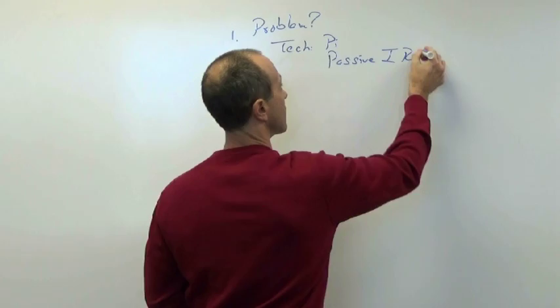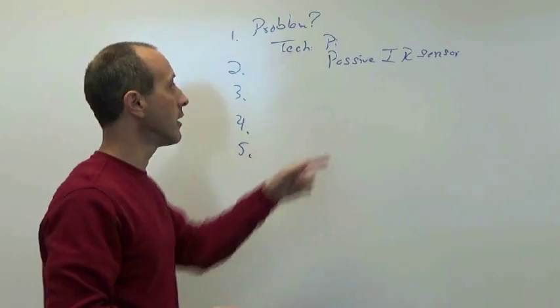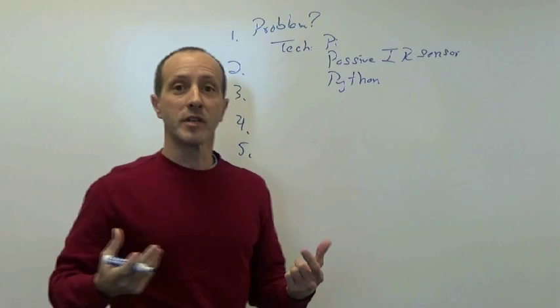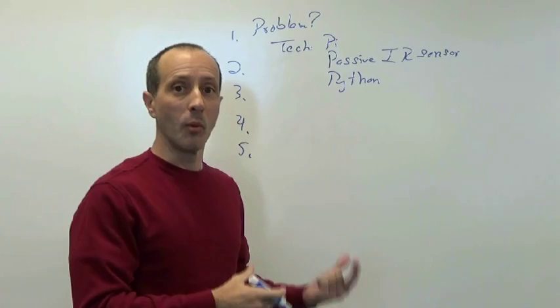So we have two pieces of technology. We have the Pi and a passive infrared sensor. That's good. We're also going to use Python code to program our Pi. So now we've just asked ourselves a question. We have a problem that we need to solve.